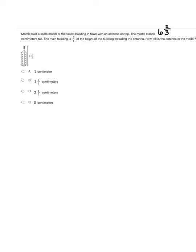Now this is a tricky question that was made even trickier by the fact that I think there's a typo in the test because this number doesn't appear. The height of the entire model was six and two-thirds centimeters. Since the main building is three-fourths of that, I need to calculate three-fourths of six and two-thirds. That magic word 'of' means I'm going to be multiplying these fractions together to calculate the height of the antenna which you can see here in blue.